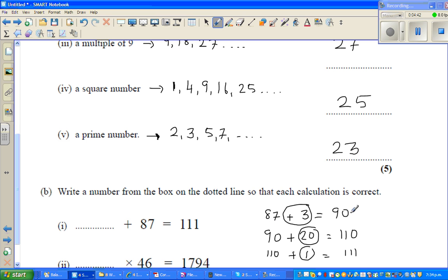So my answer would be 24. This is how I work it out: first go to the nearest ten number, then make it 110, then add 1. So 20 plus 3 plus 1 is 24.